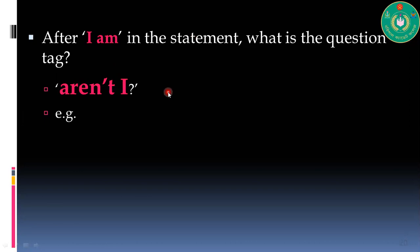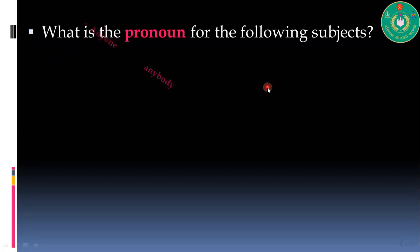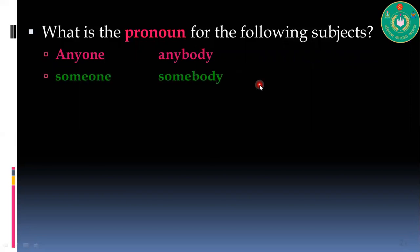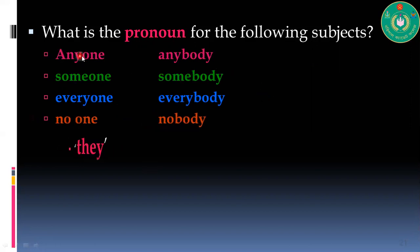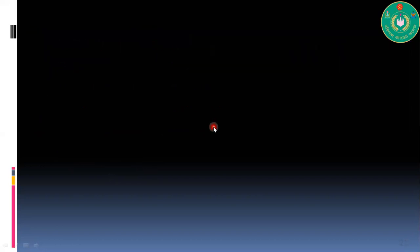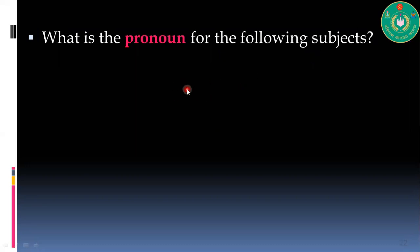What is the pronoun for the following subjects? This is tricky - if you remember this, tag questions will be very easy for you. Anyone, anybody, someone, somebody, everyone, everybody, no one, nobody - all these subjects take the pronoun 'they'. And for anything, something, nothing, the pronoun will be 'it'.